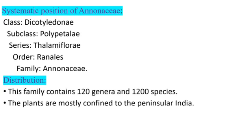And family Annonaceae. Distribution: this family contains 120 genera and 1200 species. The plants are mostly confined to the peninsular India region.